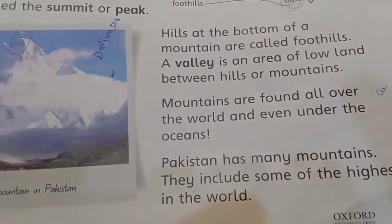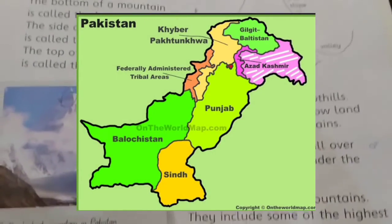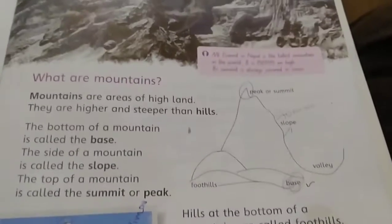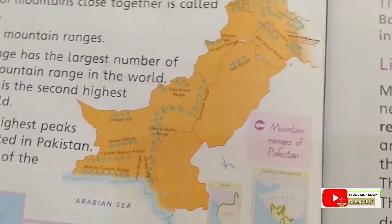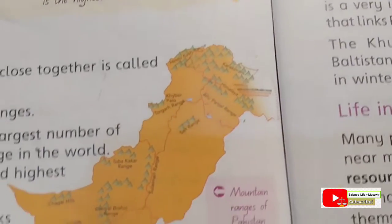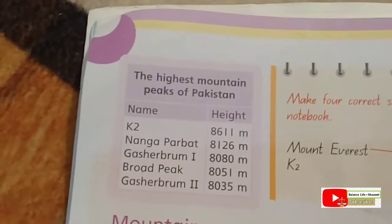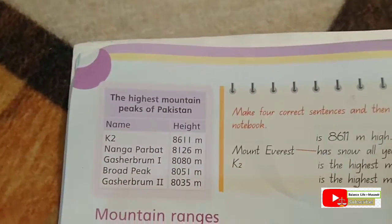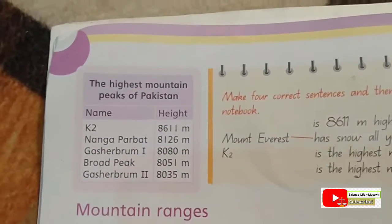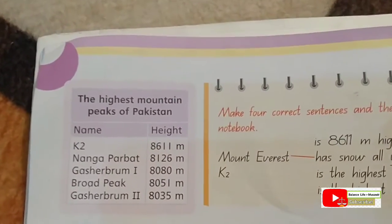Pakistan has many mountains, including some of the highest in the world. Here is the map of Pakistan — it is covered by mountains. Did you know that five out of the 14 highest peaks in the world are situated in Pakistan? Most of them are part of the Karakoram range.